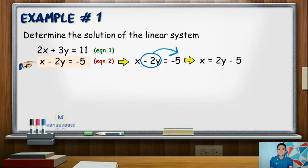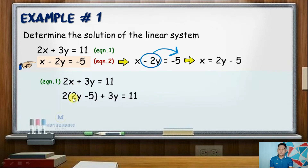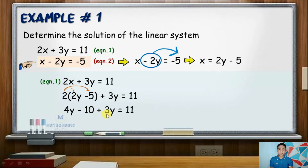Then substitute the value of x, which is 2y minus 5, into equation 1: 2x plus 3y equals 11. That will be 2 times the quantity (2y minus 5) plus 3y equals 11. Now distribute 2: 2 times 2y is 4y, and 2 times negative 5 is negative 10. Then plus 3y, and on the right side is 11.